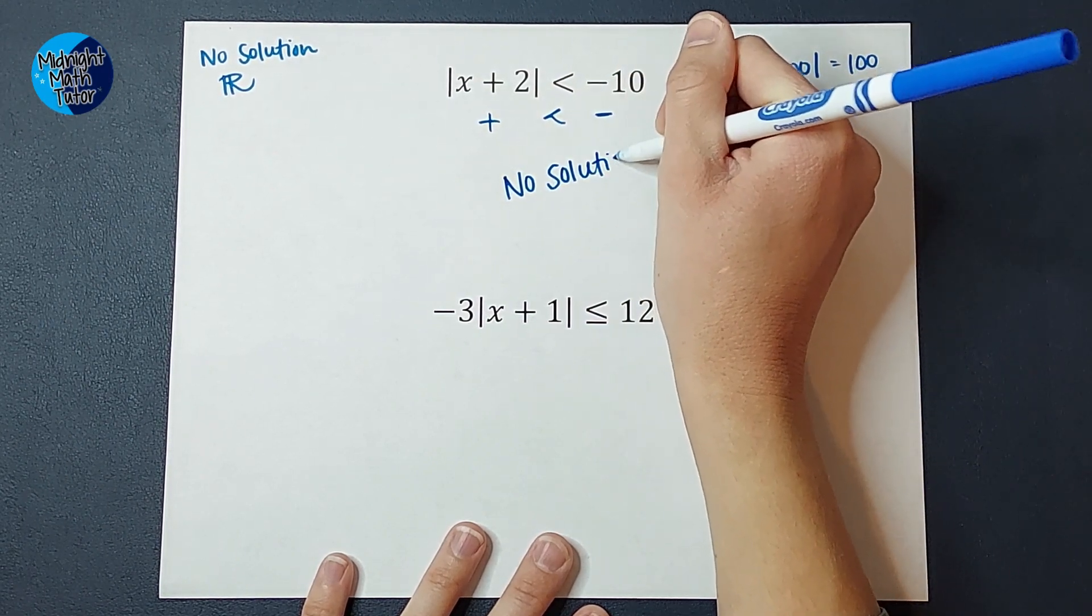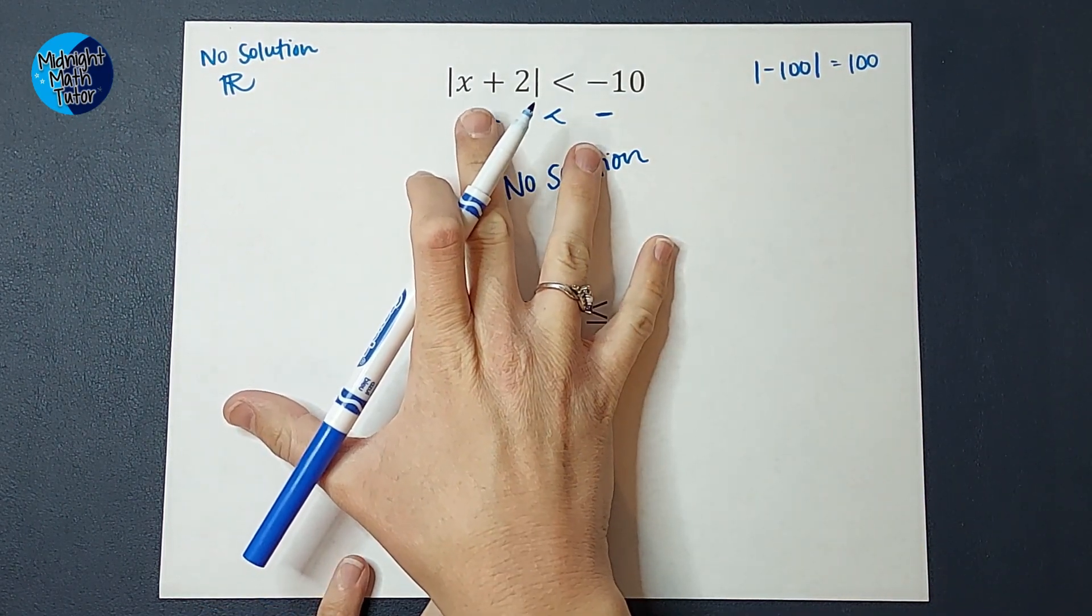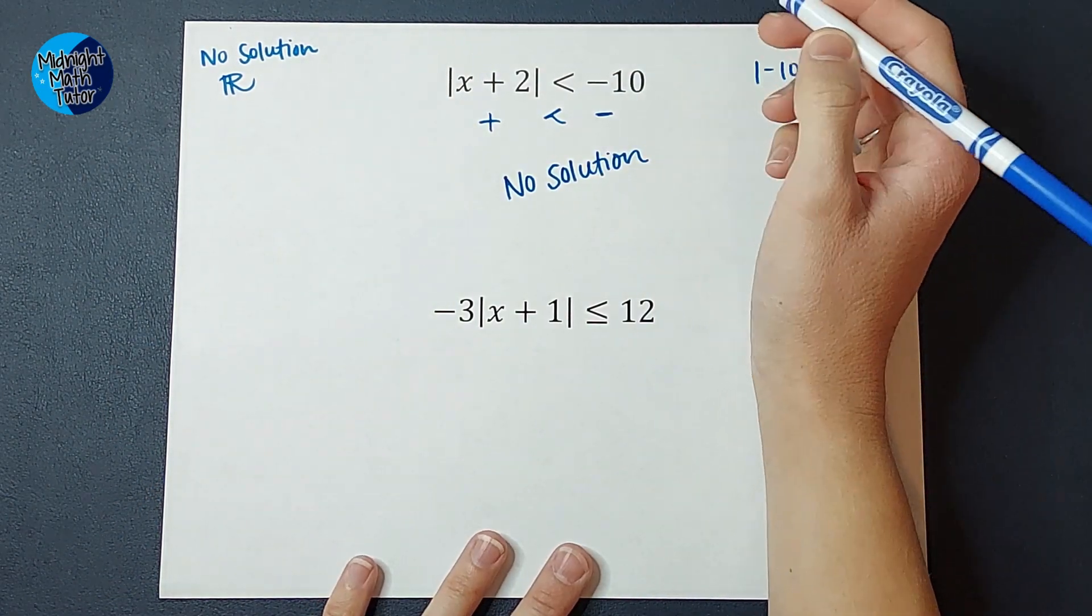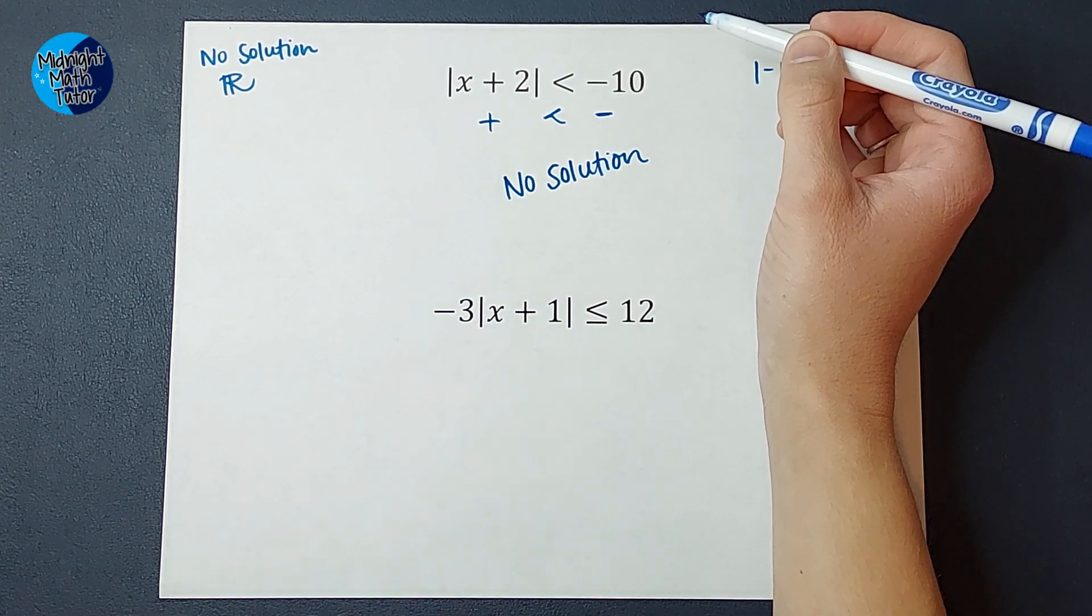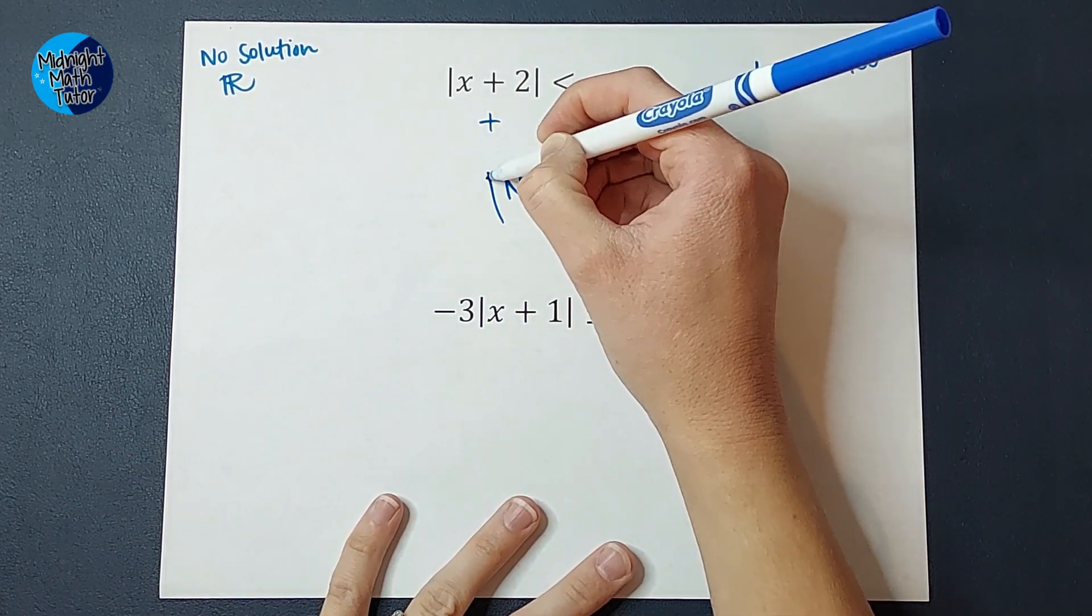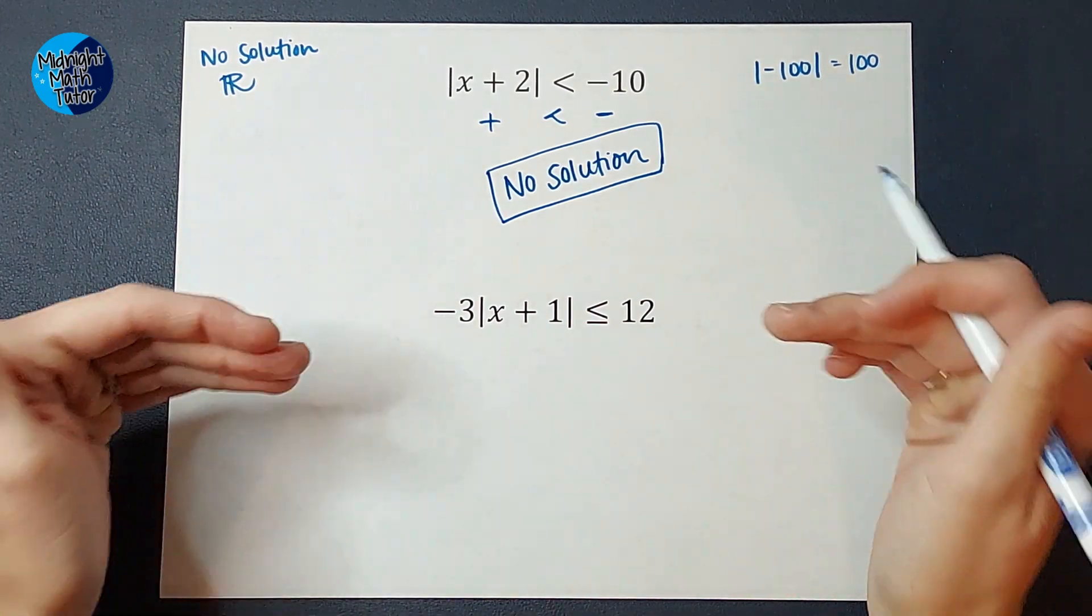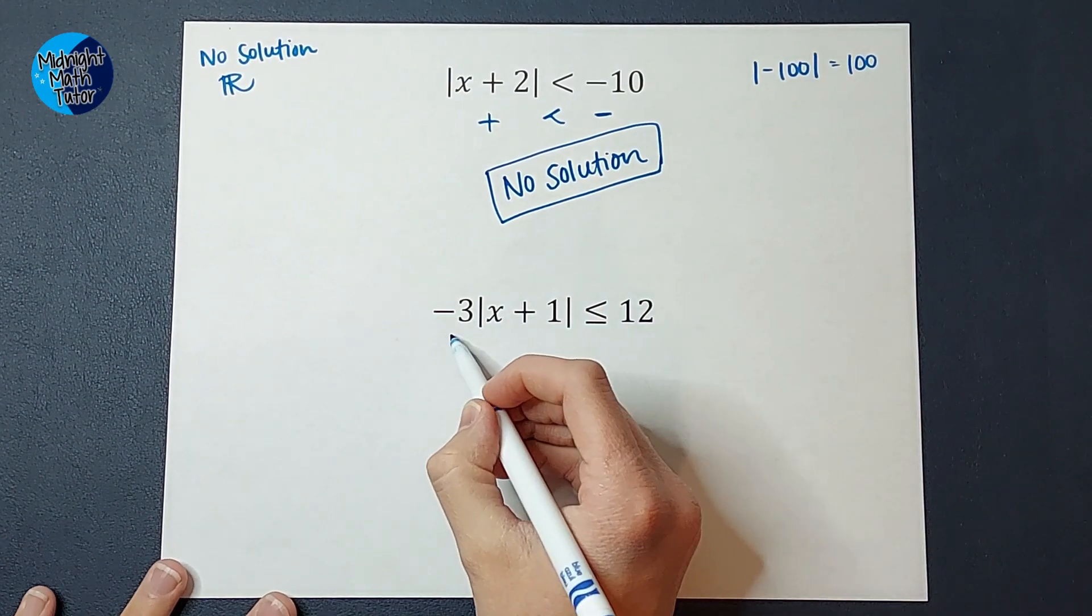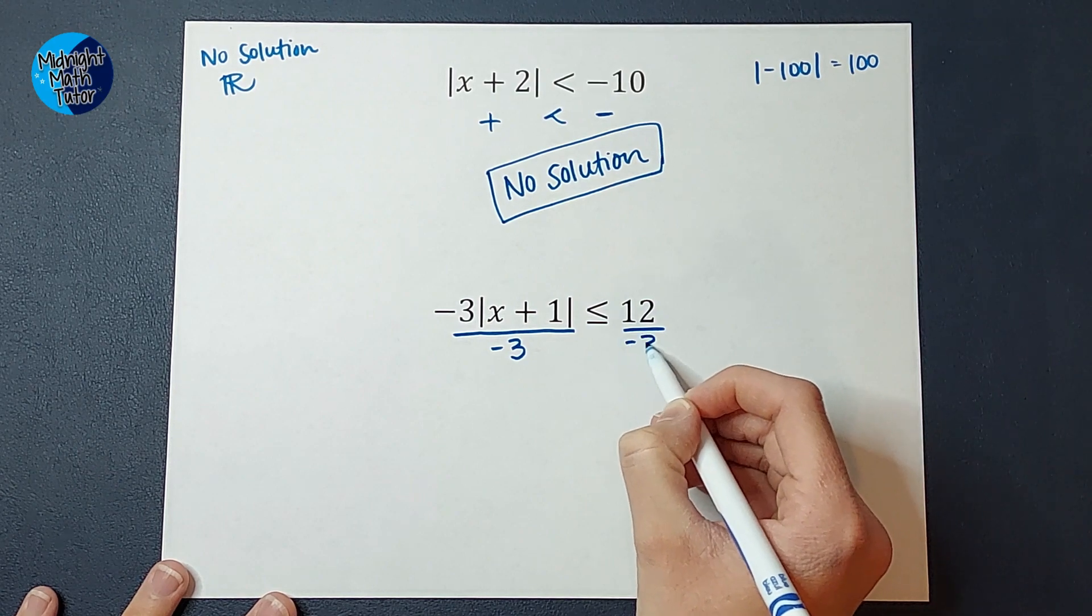So as you are working on problems like this, once you get your absolute value bars alone on one side of the inequality, if you are left with a negative on the other side, that's when you should have alarm bells going off - this is either going to be no solution or all real numbers. I bet you can guess what this one's going to be. Again, right now, it doesn't look very suspicious. But I want my absolute value bars alone, which means I need to divide both sides by negative three.